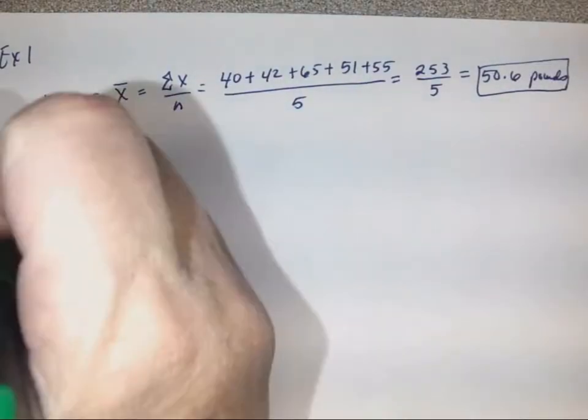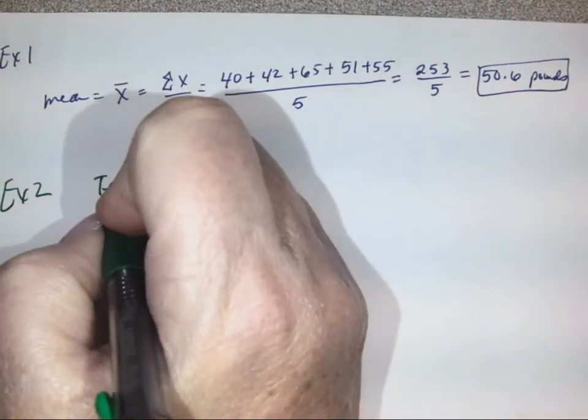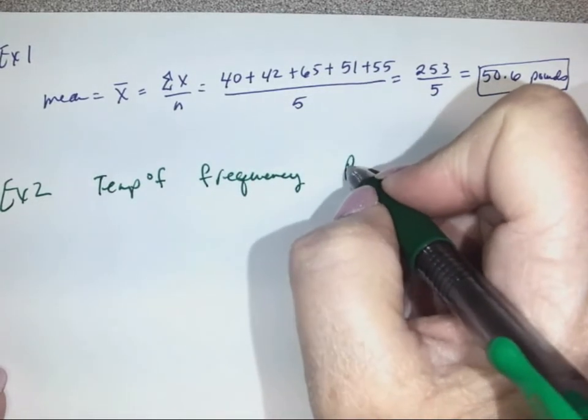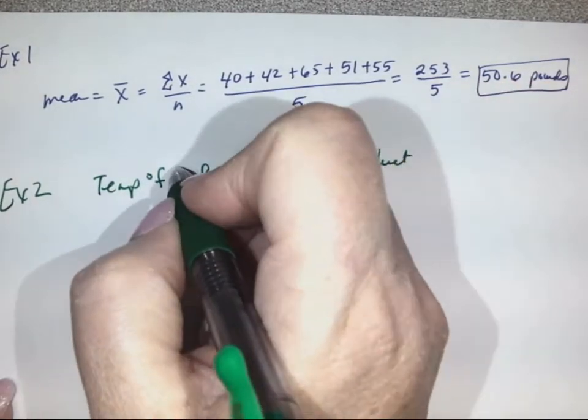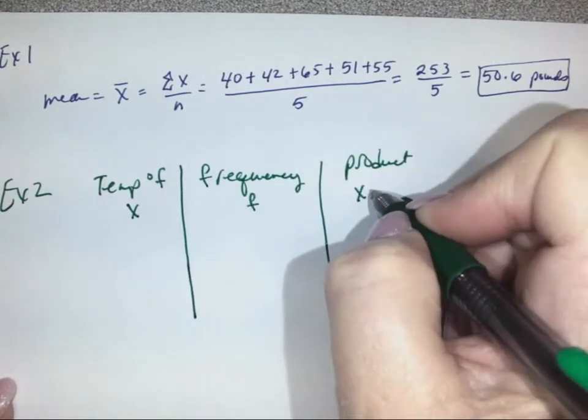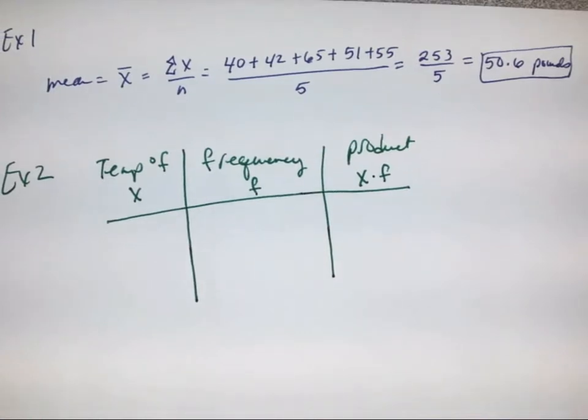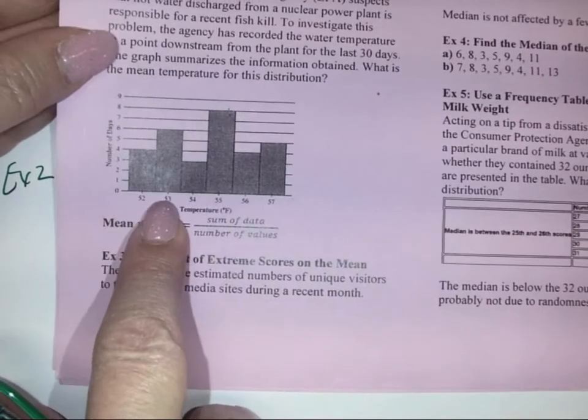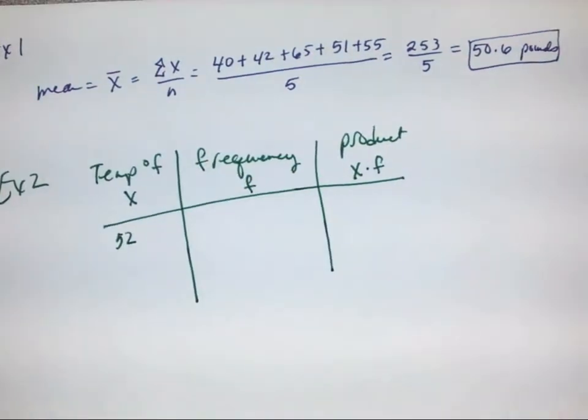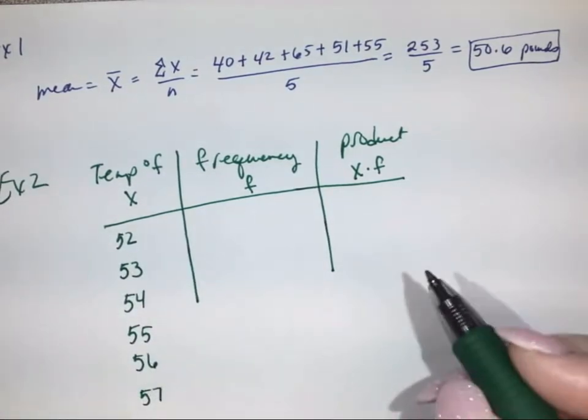For example two, we're going to do the temperature in degrees Fahrenheit, the frequency, and then the product. This will be our X, this will be our F, and this will be X times F. We're going to get our temperatures off of our chart. We have the temperature of 52, 53, 54, 55, 56, and 57.